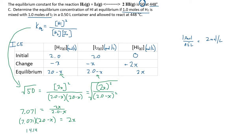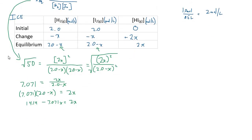So: 14.14 − 7.071x = 2x. Adding 7.071x to both sides gives 14.14 = 9.071x. Dividing both sides by 9.071 gives us, to two significant digits, x = 1.6. All units in this table are moles per liter, so x = 1.6 mol/L. That means hydrogen gas and iodine gas each changed concentration by −1.6 mol/L as the reaction reached equilibrium.